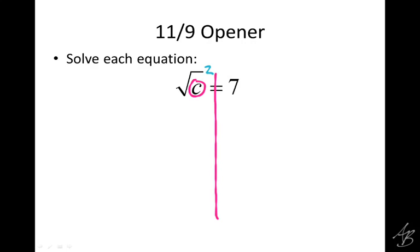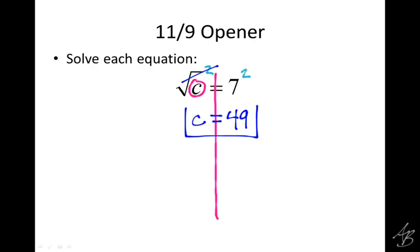The golden rule says if I do something on one side, I have to do it on the other. So I square the left side and also square the 7. The square root and the square cancel each other out, leaving c on the left. And on the right, 7 squared is 49. So c equals 49. We're using inverse operations — the inverse of a square root is squaring.